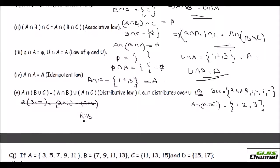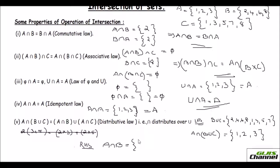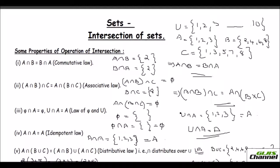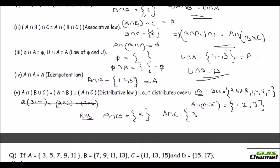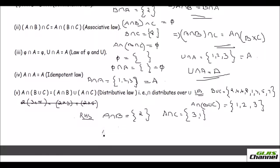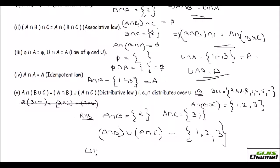Now the right hand side: find A intersection B first — 2 is common in A and B. Then A intersection C — that is 1 and 3. Putting these together, (A intersection B) union (A intersection C) gives {1, 2, 3}. The LHS equals the RHS, so the distributive law is true.